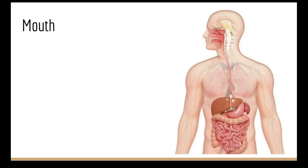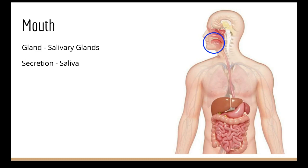We're going to start in the mouth. In the mouth you have salivary glands — you have a few different ones: ones at the back of your mouth on the sides and ones underneath your tongue. They release saliva, and your saliva has a pH of 7 to 8, so a little bit basic sometimes but mostly neutral.